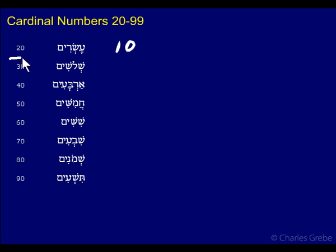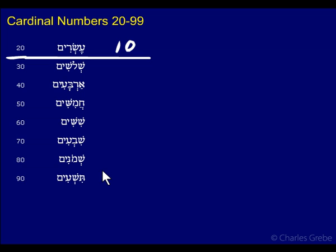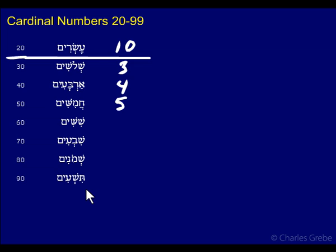So 20 is based on the plural of 10, but all the others are based on the plural of the corresponding unit: 30 is the plural of 3 — Shilashim; 40 is the plural of 4 — Arbaim; the plural of 5 — Hamashim; then Shashim, Shaveim, Shmonim, Tashim. We'll get to 100 later in a different module.